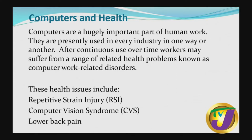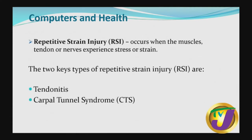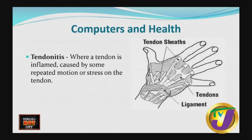We are looking at repetitive strain injury, which is RSI. RSI occurs when the muscle or tendon experiences some form of stress or strain. There are two types of repetitive strain injury: tendonitis and carpal tunnel syndrome, also known as CTS. Tendonitis is where a tendon is inflamed, caused by some repeated motion or stress on the tendon.